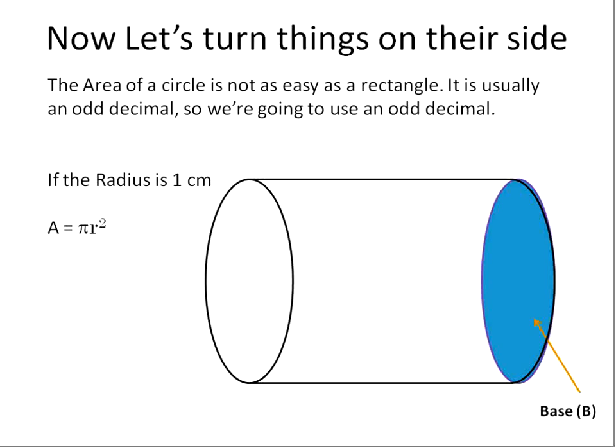It works exactly the same with cylinders or with prisms on their side. We're going to do exactly the same thing. The first thing is we find the area of the base. The big challenge with this is that the area of a circle, you can't really draw it in nice squares like we did on that other one. The area of a circle usually comes in some odd decimal. So we're going to say the radius of this circle is one centimeter.